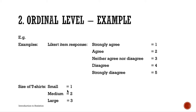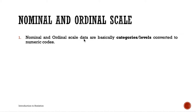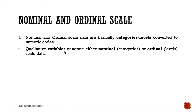An important note: nominal and ordinal scale data are basically categories and levels converted to numeric codes. Qualitative variables generate nominal data (categories) and ordinal data (levels). So qualitative variables are going to give us nominal or ordinal scale data.